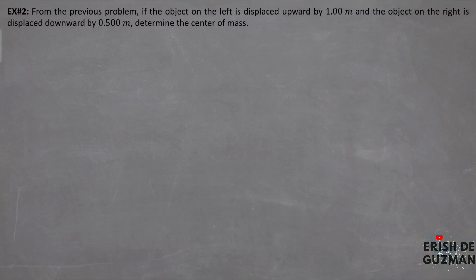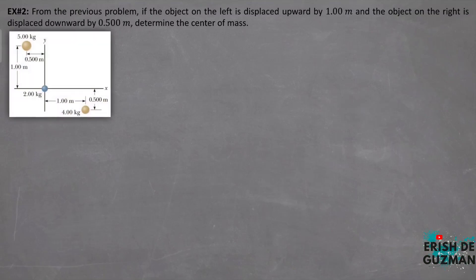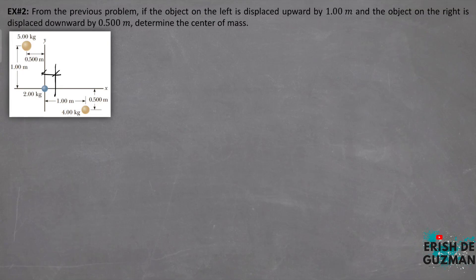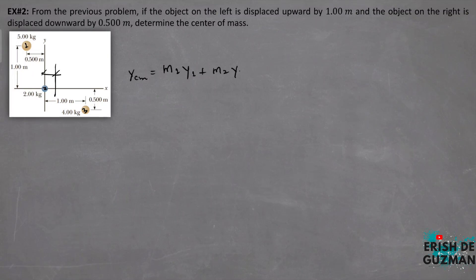Example number 2: From the previous problem, if the object on the left is displaced upward by 1 meter and the object on the right is displaced downward by 0.5 meter, determine the center of mass. Unlike in Example 1 where all objects were on the horizontal axis, we now need to calculate the center of mass along the y-axis to locate the actual point. The x_cm remains the same as before. For the y-axis: y_cm = (M1·y1 + M2·y2 + M3·y3) / M_total.